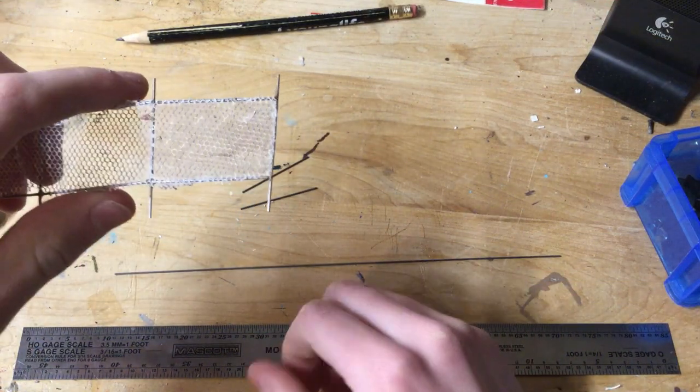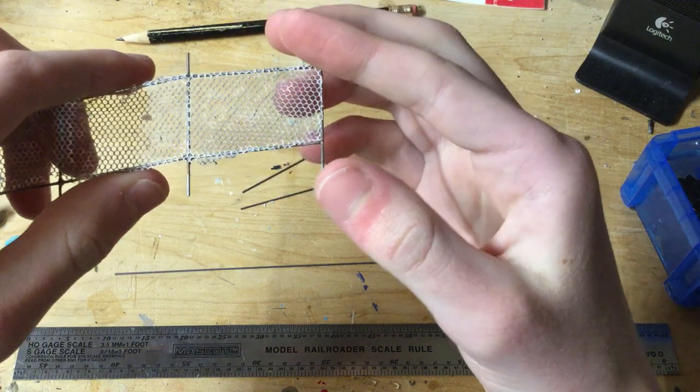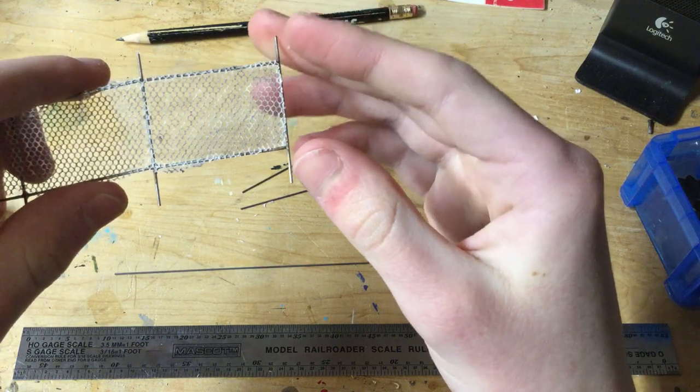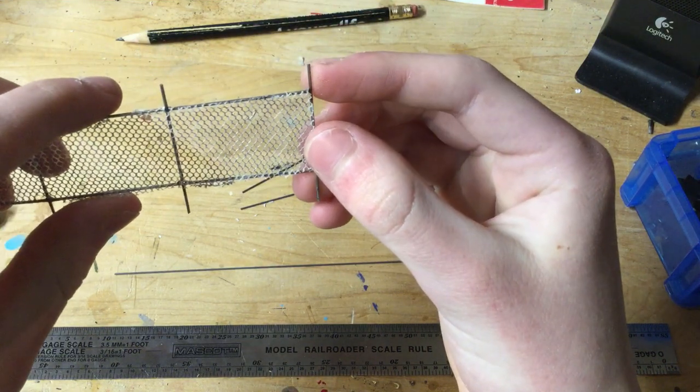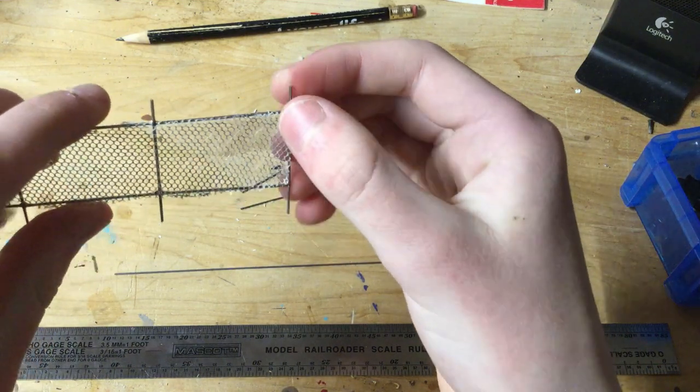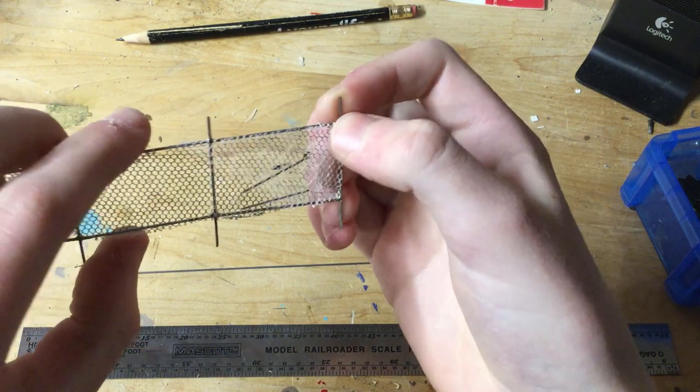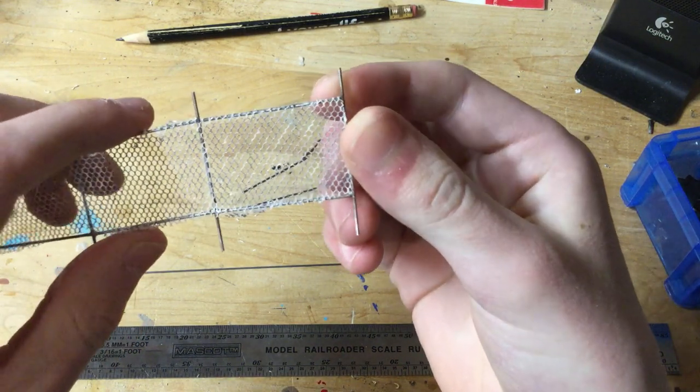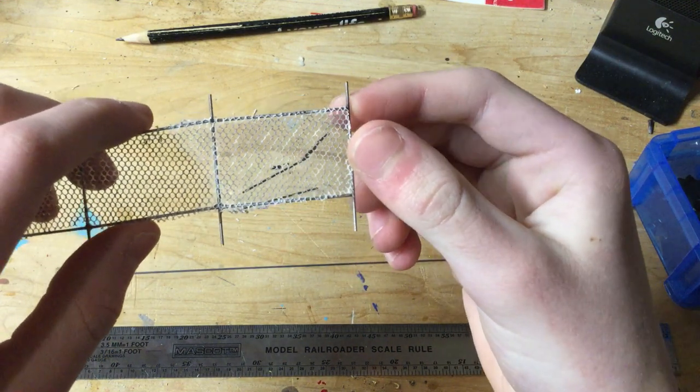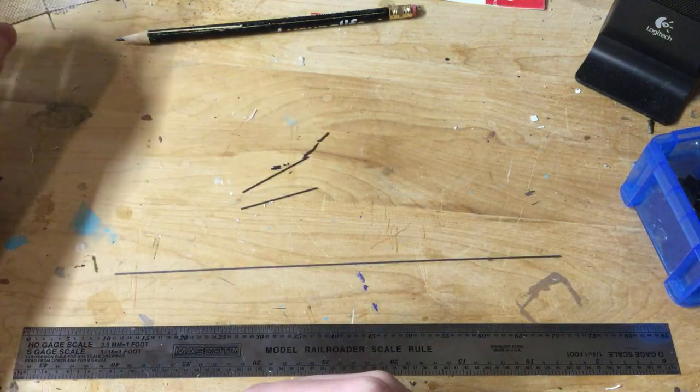One more thing I almost forgot to mention is to leave a couple scale feet on the bottom to stick it in your layout, whether that be foam or wood. You need some way of attaching it. And on the top, if you're modeling a more industrial fence, you want to leave a couple scale feet for barbed wire. This model was made for an industrial setting. I haven't bent it yet or installed the barbed wire, but this is what you would do if you wanted to put barbed wire along the top. For my somewhat residential fence, I am not going to be putting barbed wire.